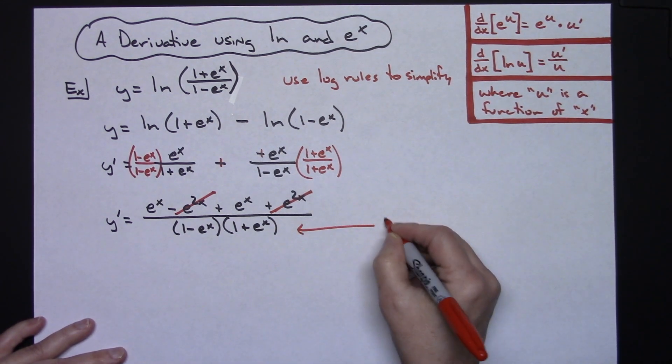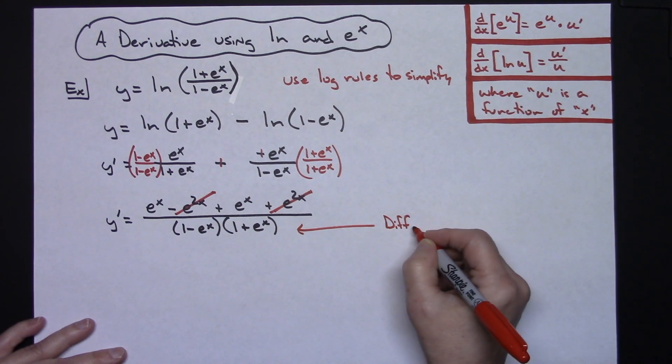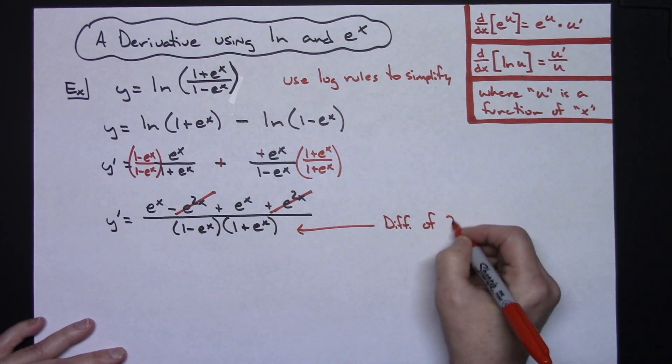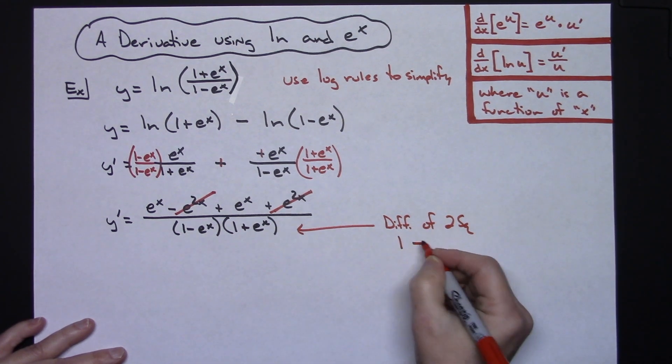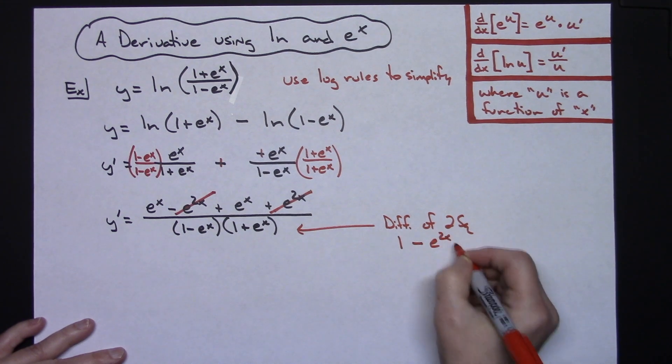Let's make that note right here. This would be basically the difference of two squares after it has been factored. So if I square the first one which would be 1, put a minus sign in between it, and then square the second one I'm going to have e to the 2x.